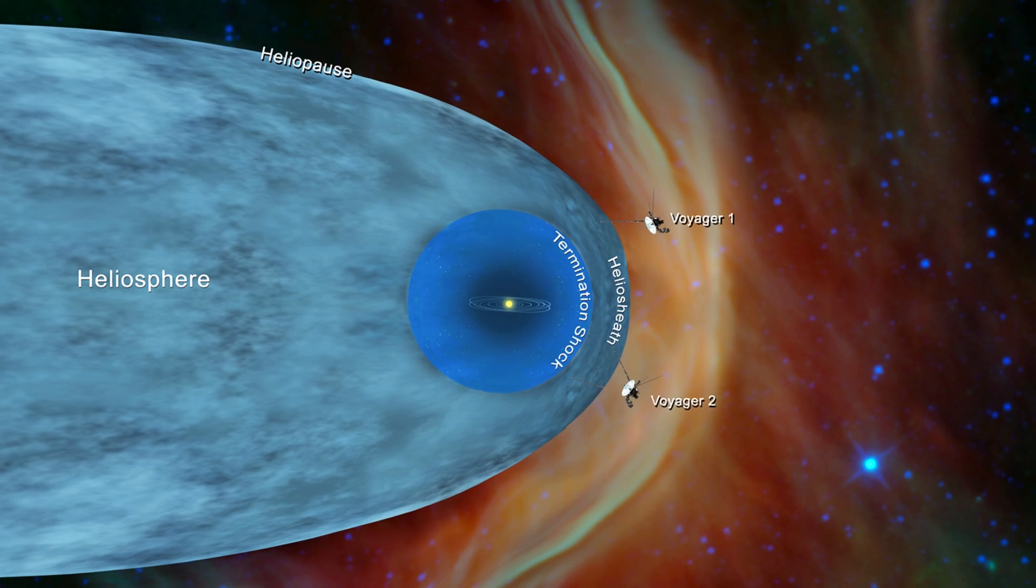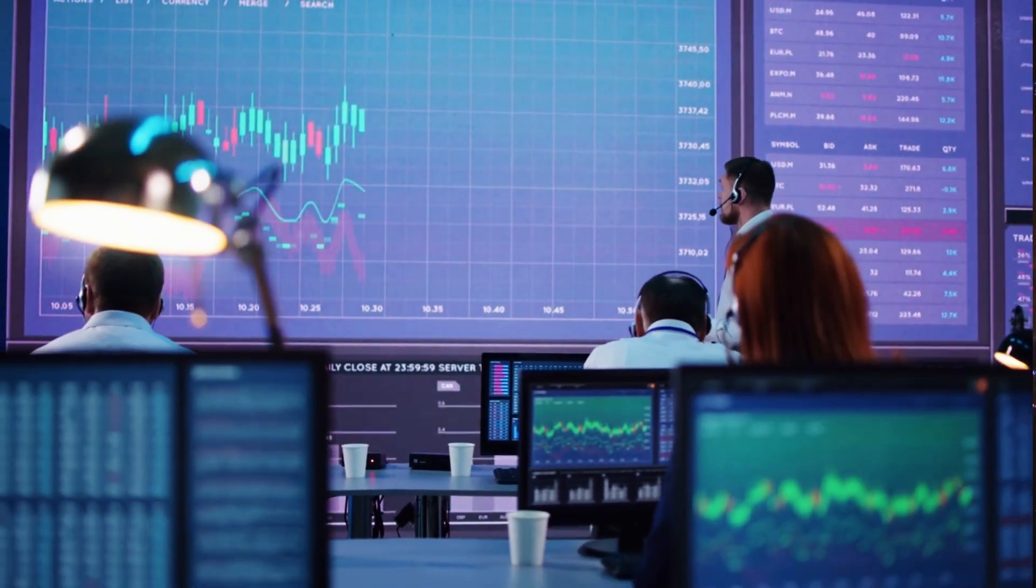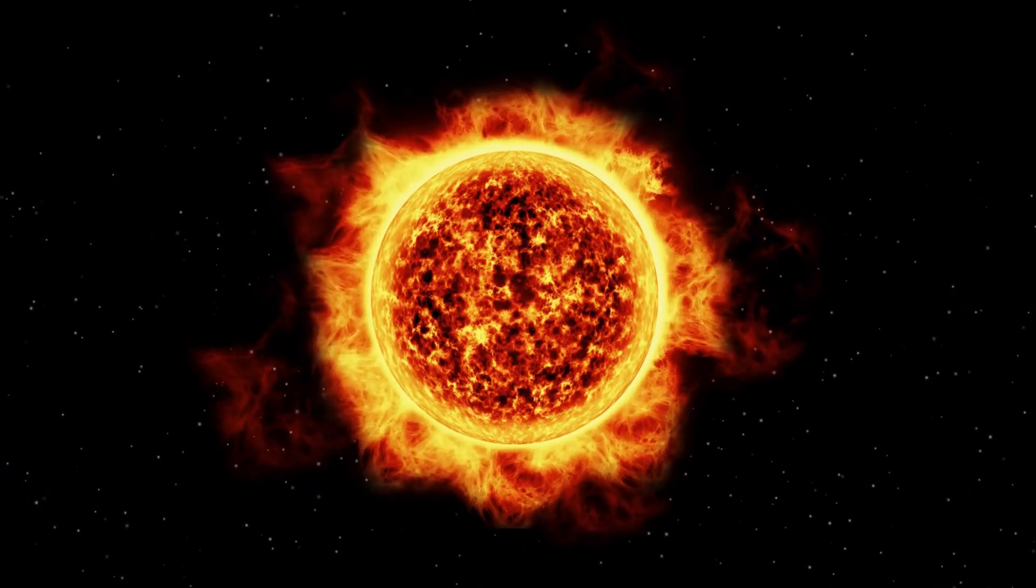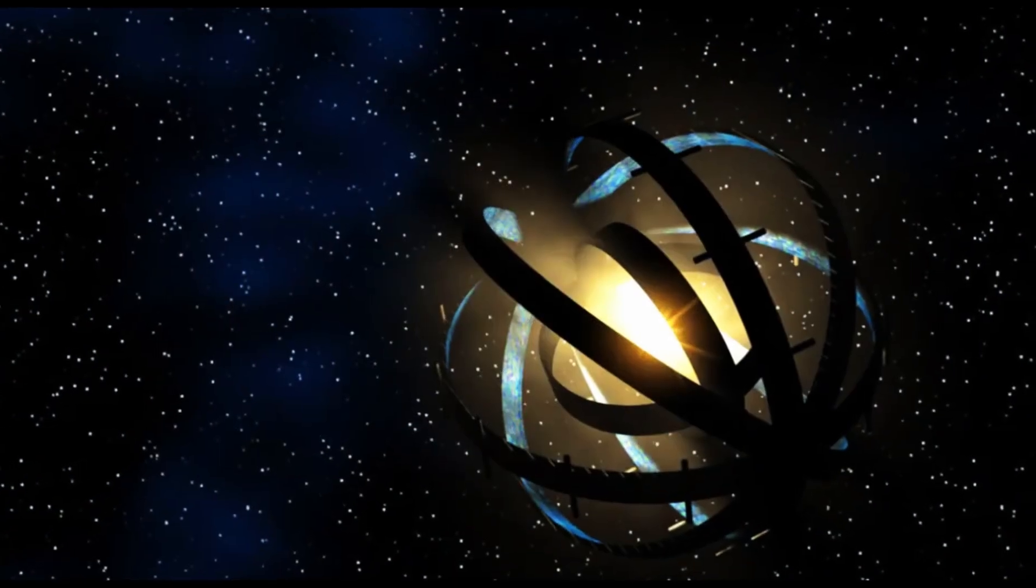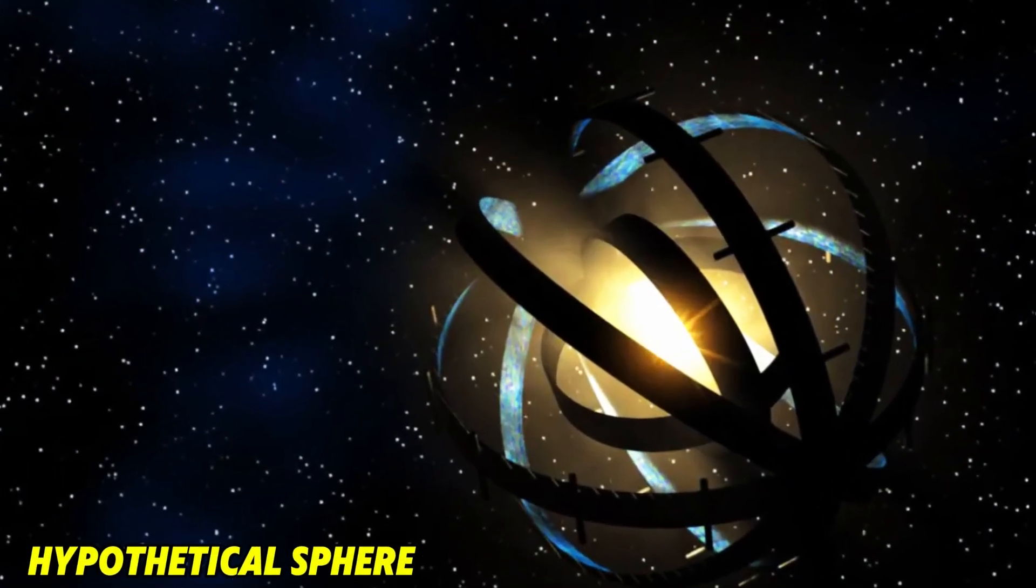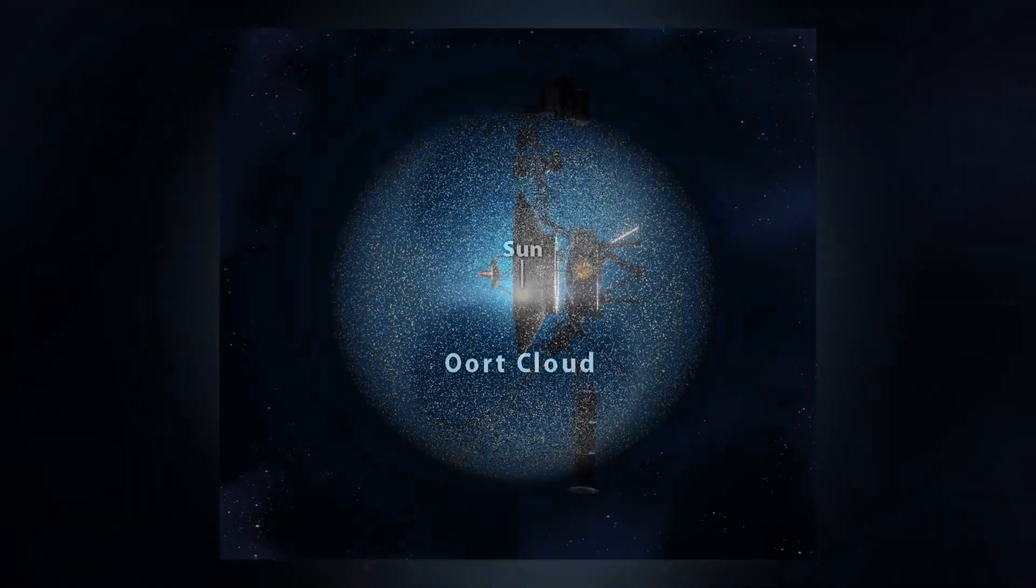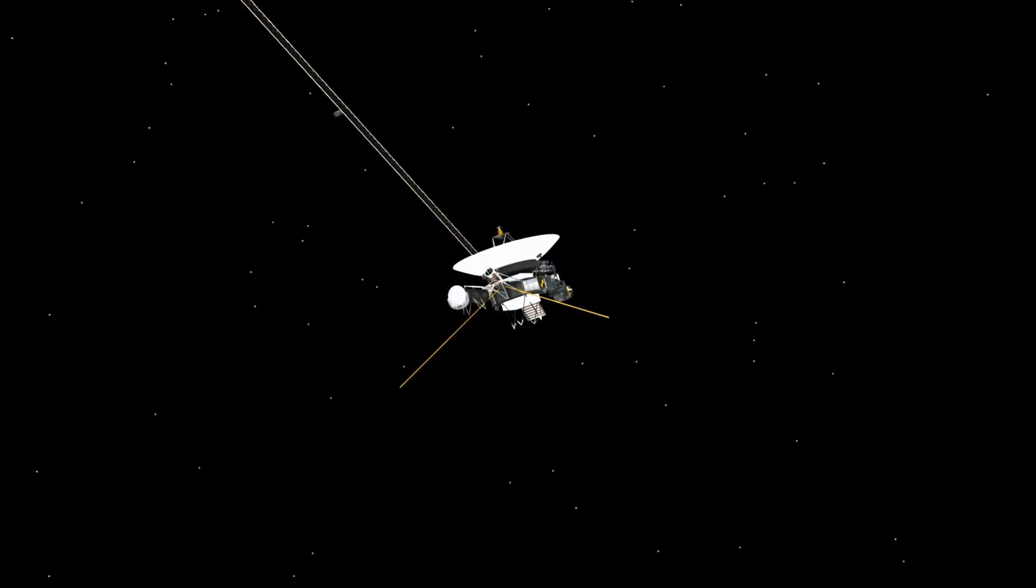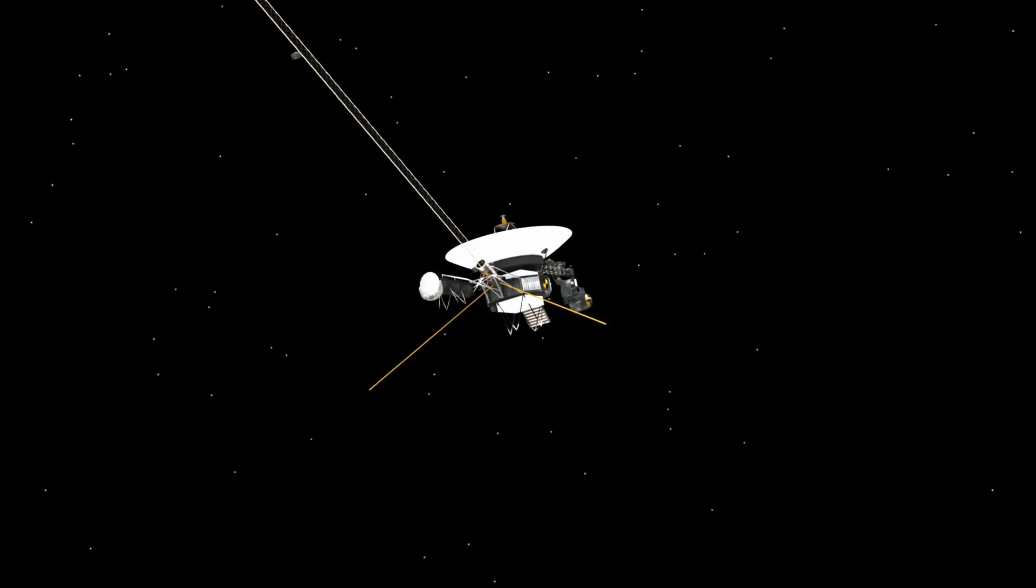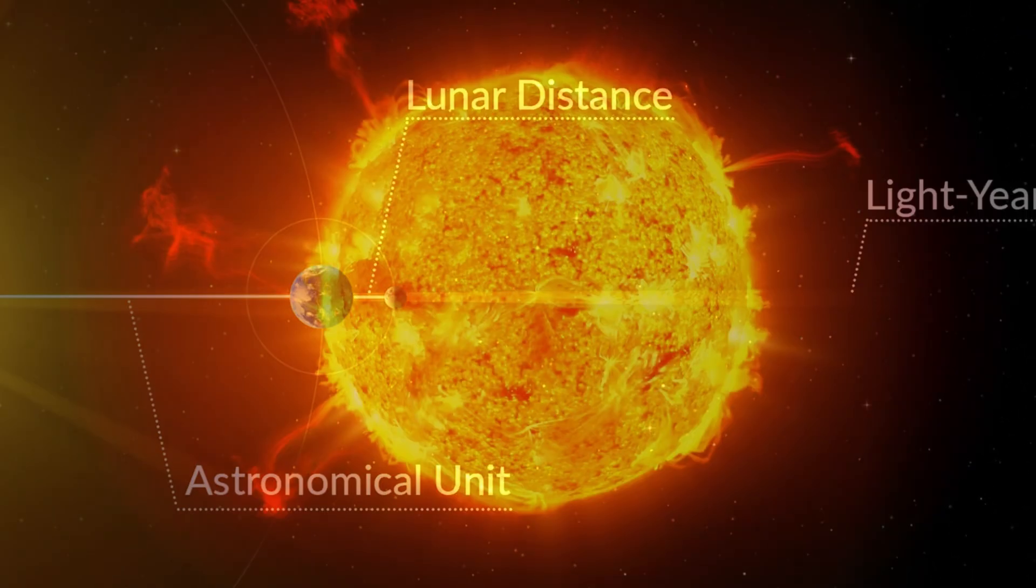While the Voyagers have left the heliosphere, scientists argue that they have not completely exited the solar system. The Sun's gravitational influence extends much further, potentially reaching the Oort Cloud, a vast hypothetical sphere believed to house comets. The Oort Cloud consists of two regions, a spherical outer shell and a disk-like inner region. Its outer boundary is estimated to be between 50,000 and 100,000 astronomical units from the Sun.